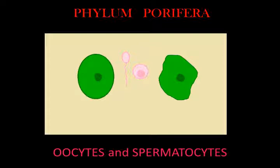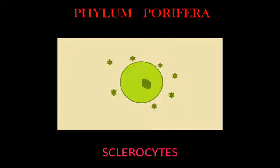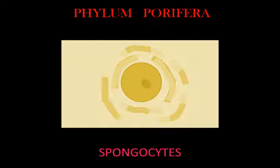Sclerocytes are cells that secrete mineralized spicules — little spines that form the skeletons of many sponges and in some species provide defense against predators.